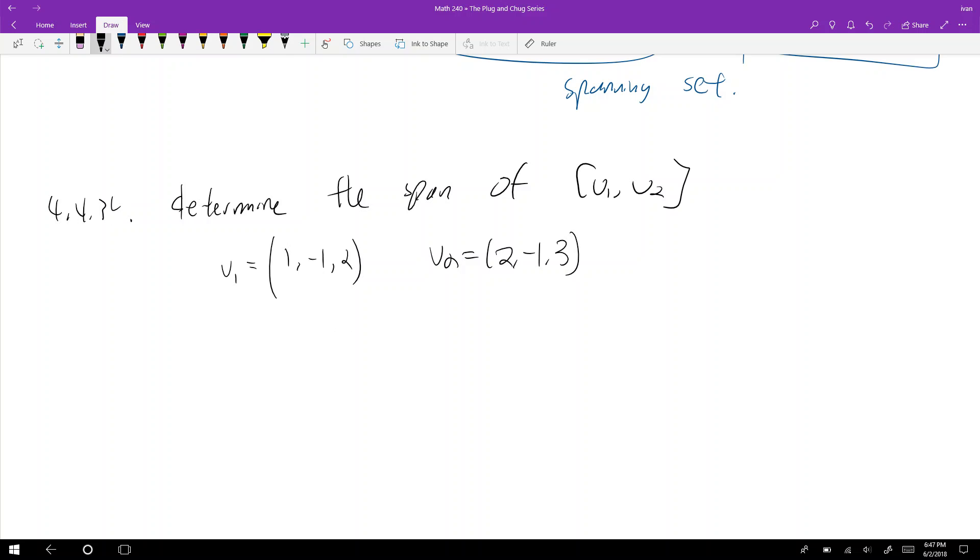How do we determine the span of this? Well, you just throw constants in front, so this is c1 times that vector plus c2 times this vector. And so it spans c1 plus 2c2, negative c1 minus c2, and 2c1 plus 3c2.